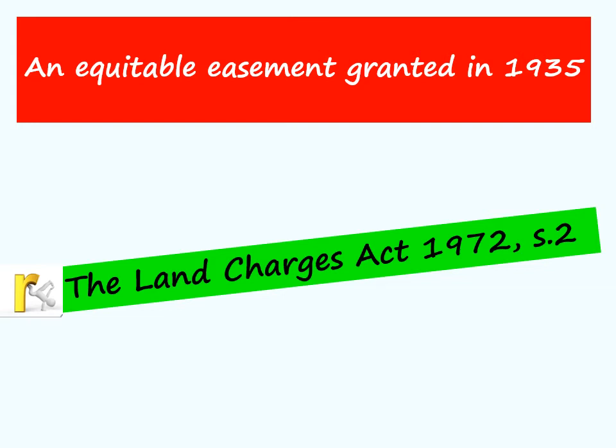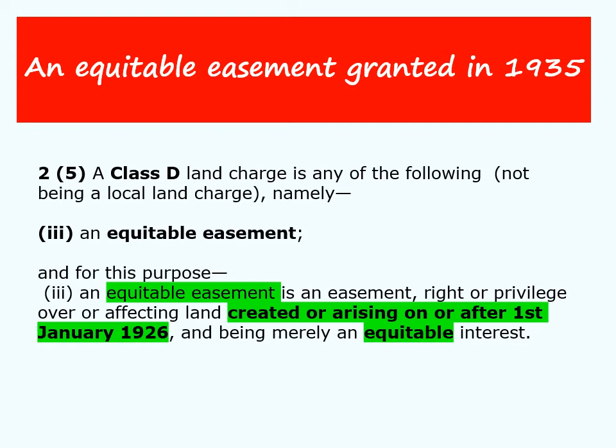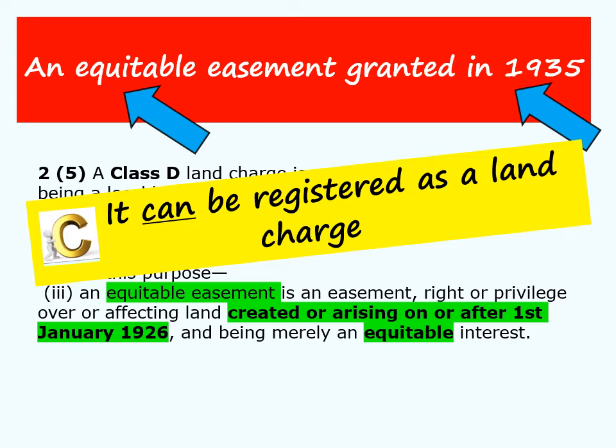The relevant rule is in section 2 of the Land Charges Act 1972, specifically subsection five, which tells us that equitable easements granted on or after the 1st of January 1926 can be registered as a land charge. Applying that rule: the facts state it is an equitable easement granted in 1935, which is after the 1st of January 1926. We can therefore conclude that this can be registered as a land charge, and if it isn't registered it won't be binding on a purchaser of the land.